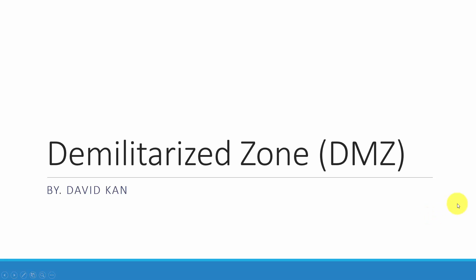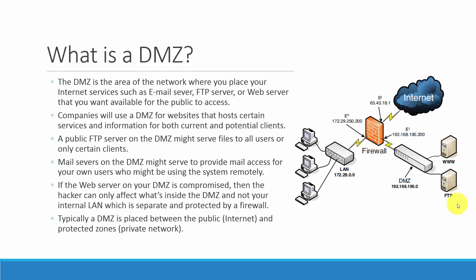For this lesson I'm going to cover demilitarized zone DMZ. A DMZ is the area of the network where you place your internet services such as email server, FTP server, or web server that you want available for the public to access. Companies will use a DMZ for websites that host certain services and information for both current and potential clients.